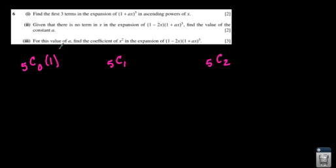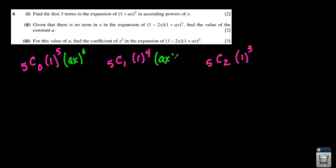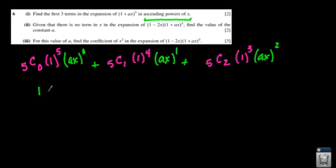For the first term, 1 gets raised to the 5th power, the second has 1 to the 4th, the third has 1 to the 3rd. Since it's ascending powers of x, x has to go from 0, 1, 2. So 5C0 is 1, 1 to the 5th is 1, times anything to the 0 power is 1. That's our first term.